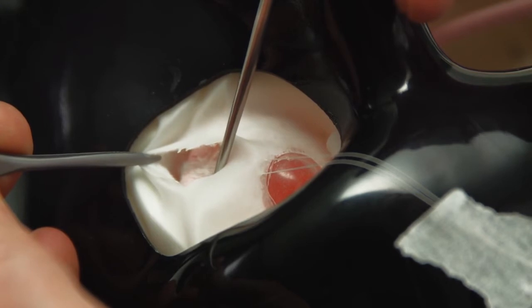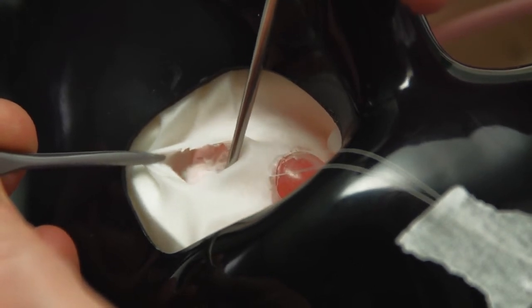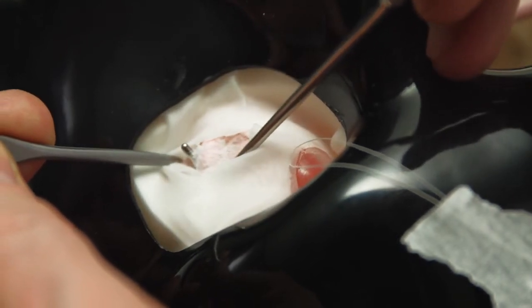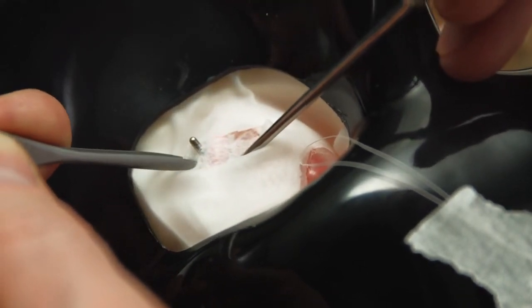The hook is passed underneath the tendon and then brought anteriorly into the conjunctiva opening.